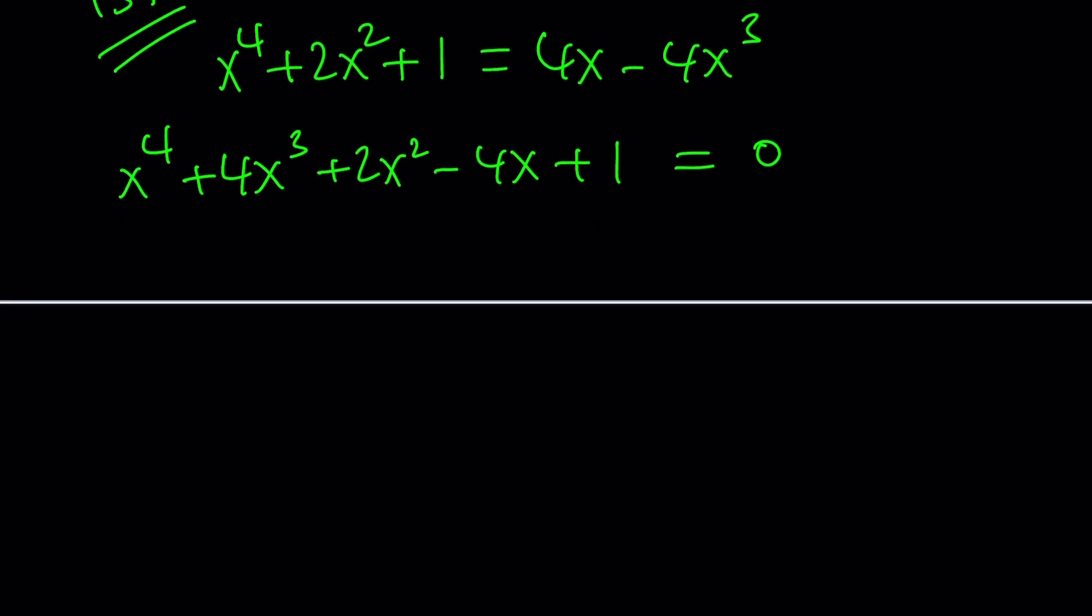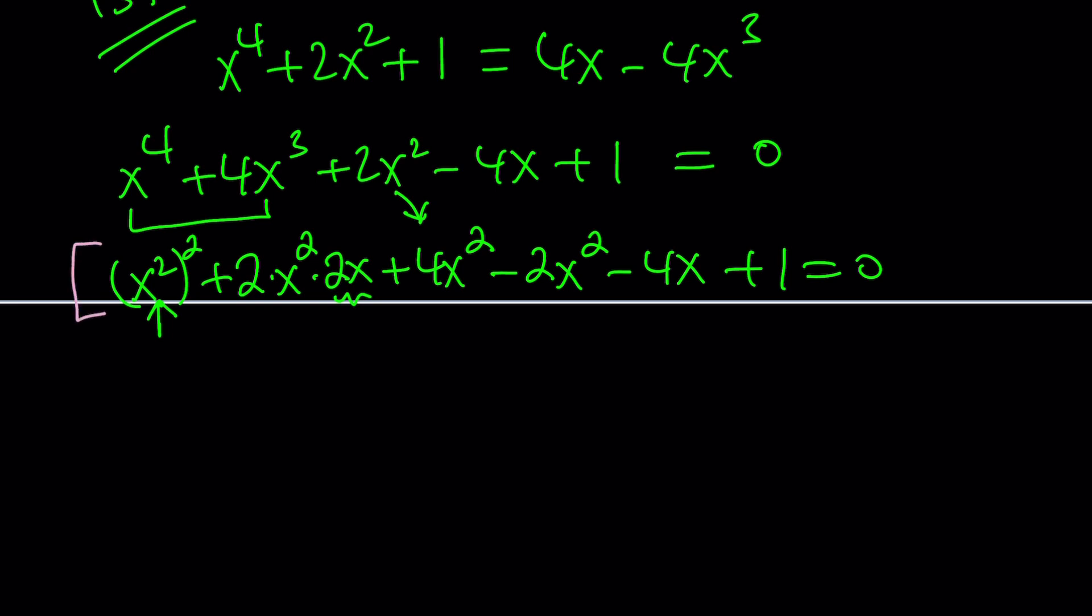Now, we're going to put it in a nicer form by completing the square. How do we complete the square? By looking at the first two terms. Notice that these two terms are part of a perfect square. This would be (x²)², this would be 2 times x² times 2x. So this is your a, this is your b, and this is 2ab. So all you need is b², which is 4x². But wait a minute. I don't have 4x². I have 2x². So what I need to do is subtract 2x² to balance it out. So we break down the 2x² into 4x² - 2x².